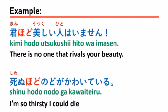君ほど美しい人はいません means 'There is no one as beautiful as you' — nobody could match your beauty. So hodo is used to measure or compare a level, expressing that something equals or surpasses another from the speaker's opinion.